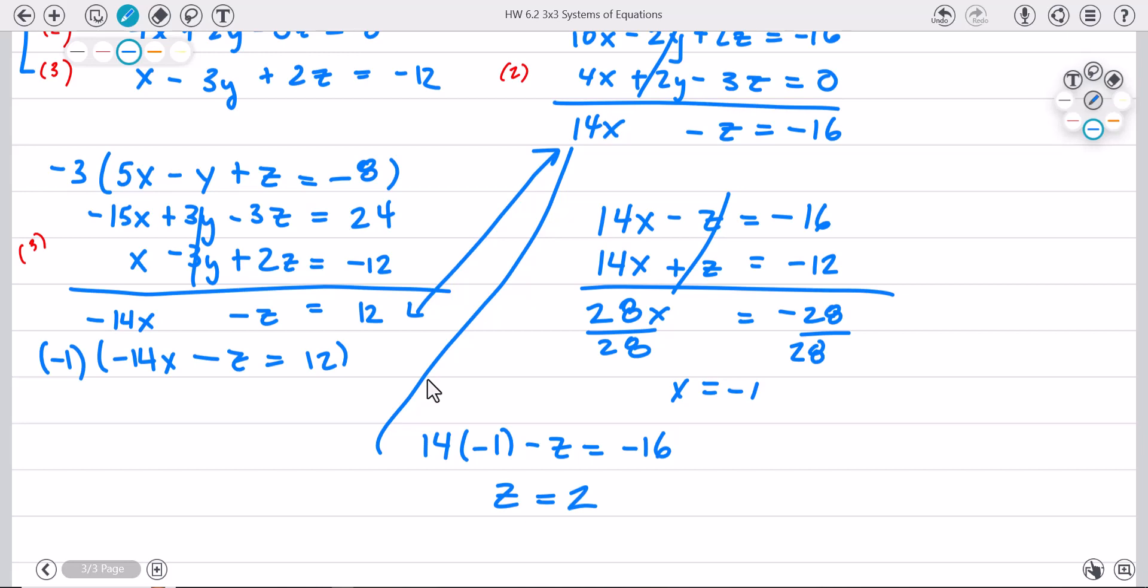And then I can go back to, say, the first equation, five x. Plug in negative one. Minus y. Plus z. Plug in two. Equals negative eight. And you go through all the algebra steps, and you get y equals five. So your solution would be negative one, five, and two.